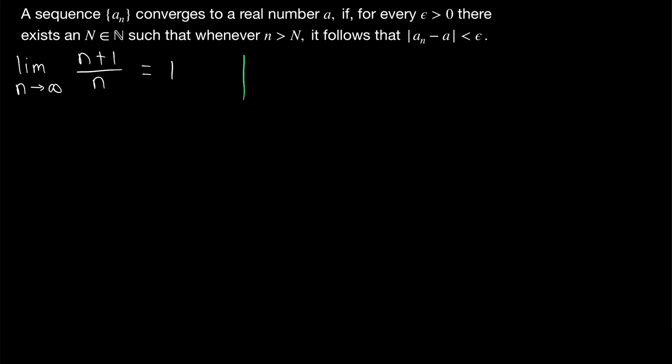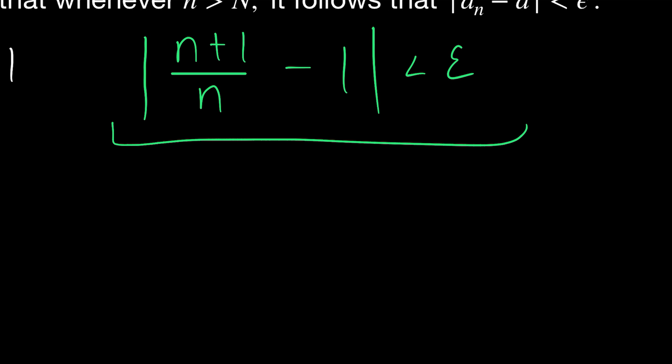So we actually begin with the inequality that we want our proof to end with, which is the absolute value of terms of the sequence, so n plus 1 divided by n minus the desired limit. We think the limit is 1, so minus 1. This is less than epsilon. That's how our proof should end. Since this is the inequality we want to be true, we'll manipulate it into some equivalent inequalities in order to solve for n. We want to see how big n has to be to guarantee this inequality.